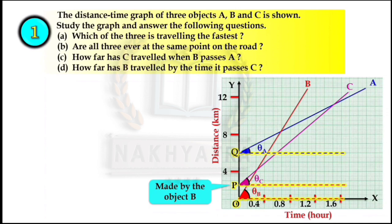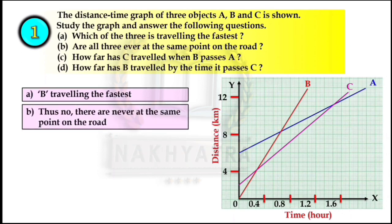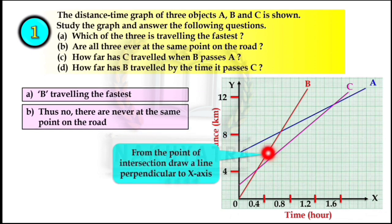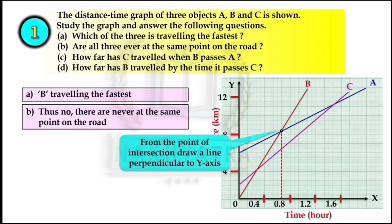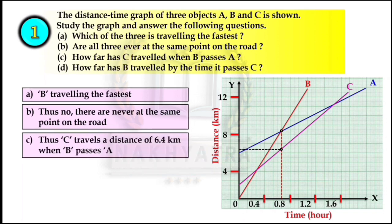Are all three ever at the same point on the road? There is no common point of intersection for A, B and C on the graph, so they are never at the same point on the road. For how far C has traveled when B passes A: from the point of intersection of B and A, draw a perpendicular to the y-axis, which intersects at 6.4 km. So C travels 6.4 km when B passes A.